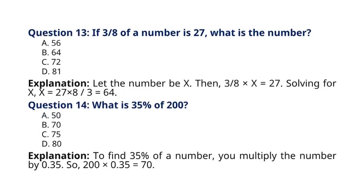Question 13. If 3 by 8 of a number is 27, what is the number? A. 56, B. 64, C. 72, D. 81. Explanation: Let the number be X. Then, 3 by 8 multiplied by X is equal to 27. Solving for X, X is equal to 27 multiplied by 8 divided by 3, which is equal to 64. So the correct answer to question 13 is option B. 64.